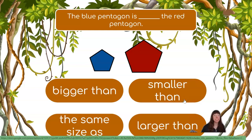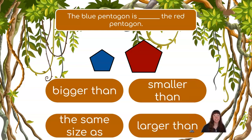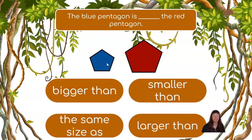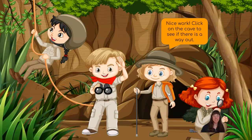The blue pentagon is blank — the red pentagon. Is the blue pentagon bigger than the red pentagon? Smaller than the red pentagon? The same size as the red pentagon? Or larger than the red pentagon? Let's take a look. This is our blue pentagon and this is our red pentagon. The blue pentagon is taking up less space than the red pentagon. That makes the blue pentagon smaller than the red pentagon. Nice work!